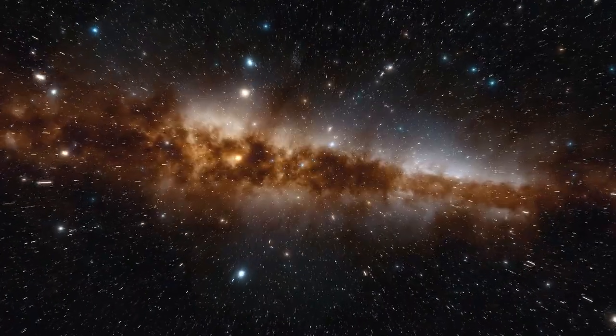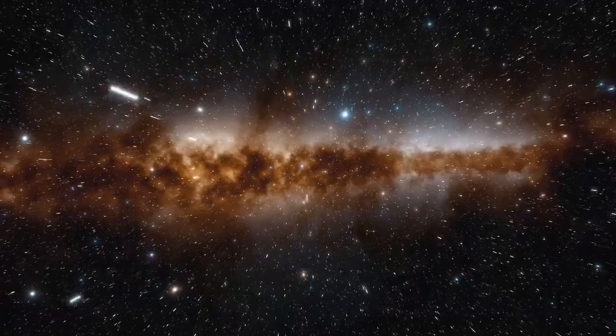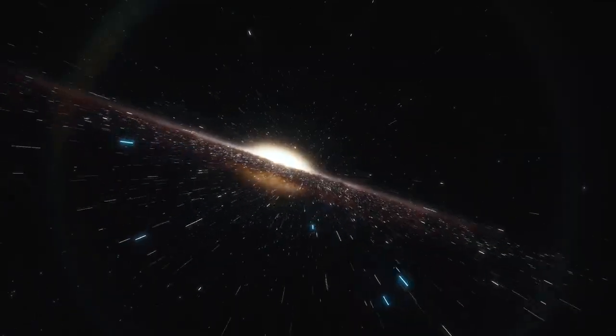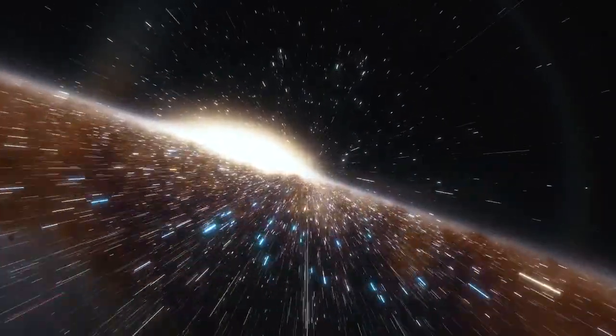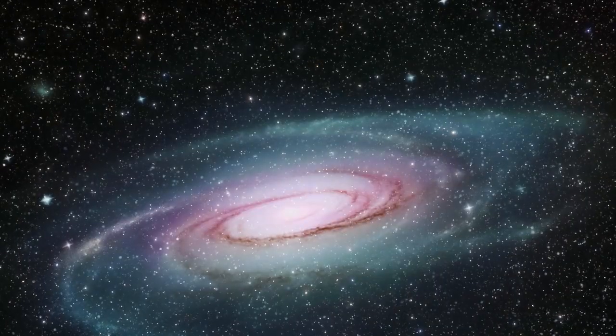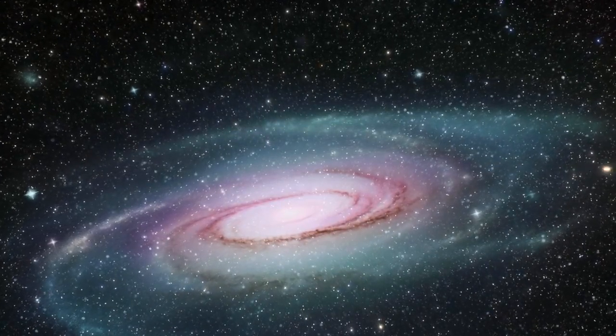The Milky Way is not alone. It is part of a group of galaxies called the Local Group, which also includes the Andromeda Galaxy. Despite its vast size, the Milky Way is just one of billions of galaxies in the observable universe. Our solar system resides in the Orion Arm, a minor spiral arm extending from the Milky Way's center.